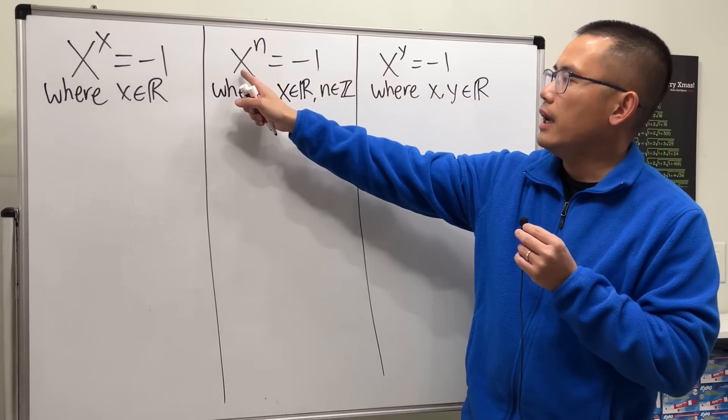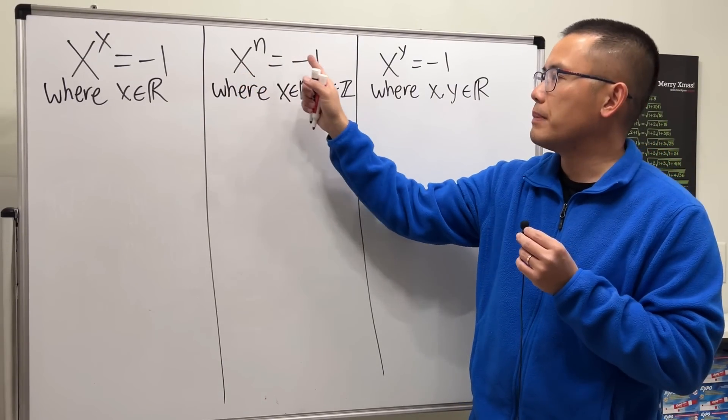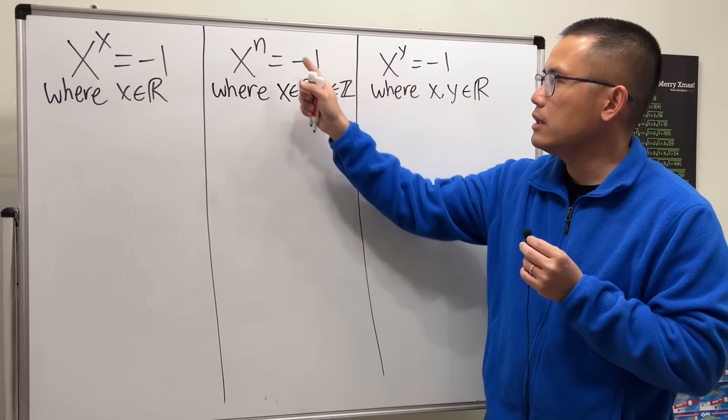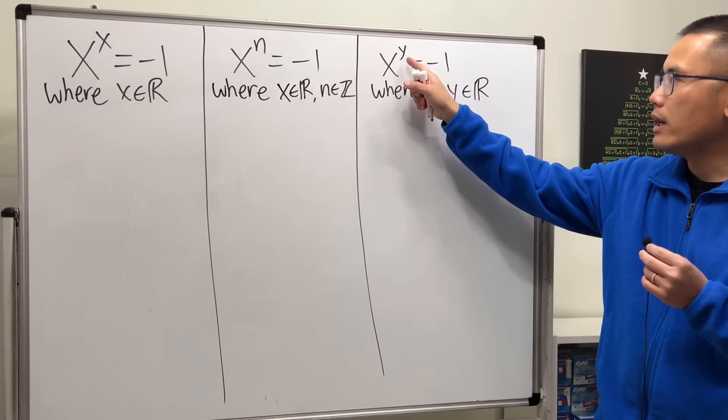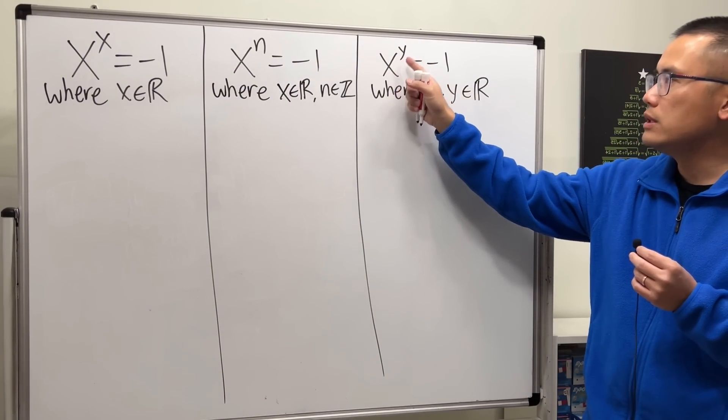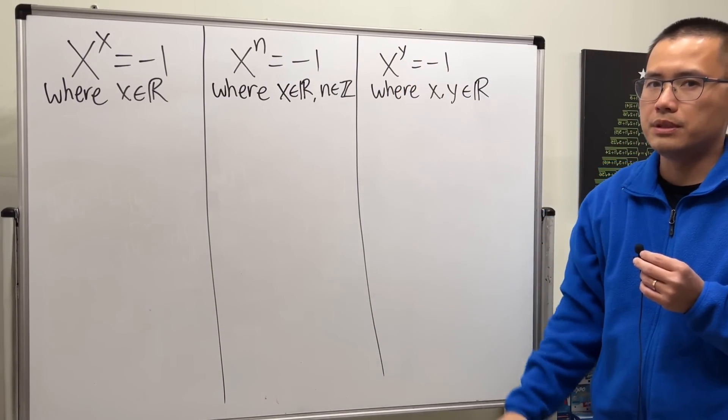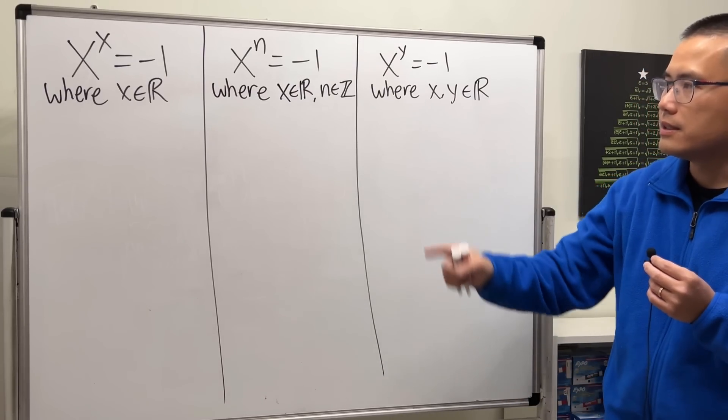Next, x is a real number for the base, but we have an integer n for the exponent. Lastly, x and y are both real numbers, and you see that this time right here, they don't have to be the same. Okay, start with the first one.